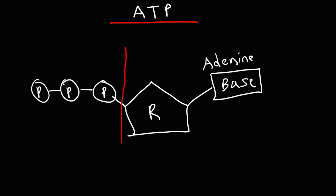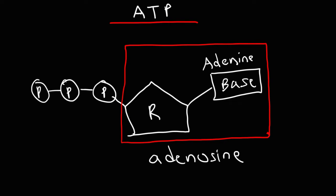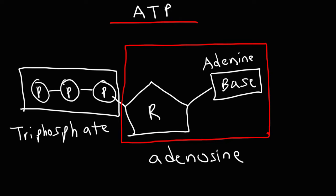When you combine the ribose sugar and the nitrogenous base adenine you get a nucleoside and that nucleoside is called adenosine. Now because we have three phosphate groups on the left this is called triphosphate, tri for three. So thus we have the name adenosine triphosphate. A nucleotide has three parts: a ribose sugar, a nitrogenous base, and the phosphate group. So ATP is a nucleotide. It has three phosphate groups instead of one.